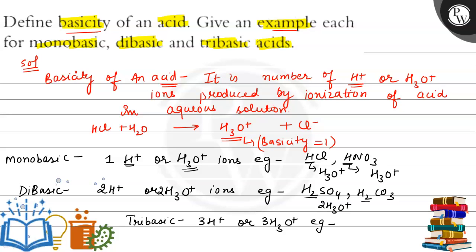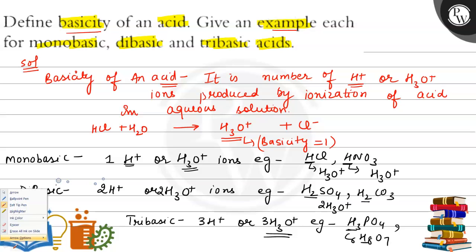An example of a tribasic acid is H₃PO₄, or we can say citric acid C₆H₈O₇. Both have three replaceable hydrogens and give three H₃O⁺ ions upon ionization. This is the solution to this question regarding the basicity of an acid and monobasic, dibasic, and tribasic acids.